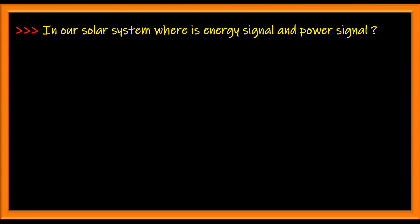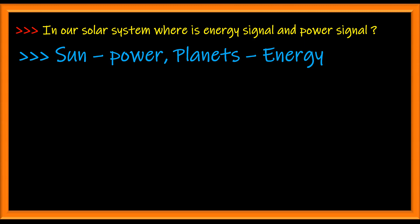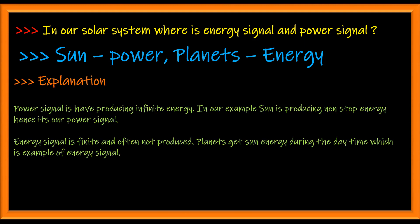In our solar system, where is the energy signal and the power signal? It is an analogy question. The power signal comes from our sun, and the planets around it form the energy signal. Since the power signal has to supply energy continuously till infinity, the sun is our power signal. Since the planets draw energy from the sun, they form your energy signal.